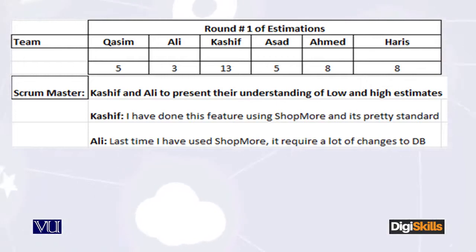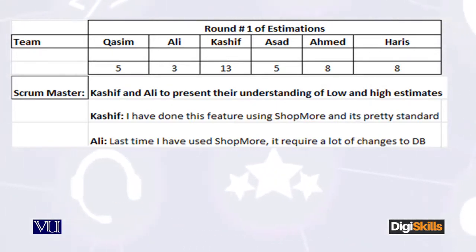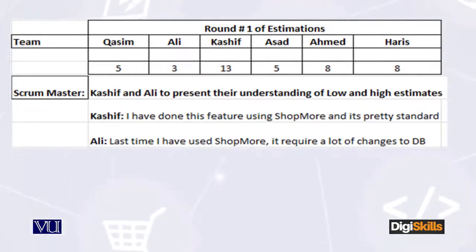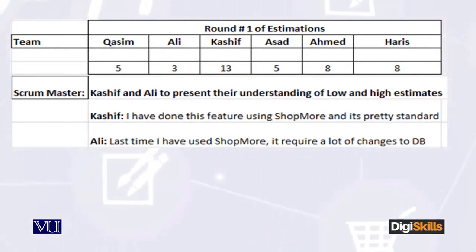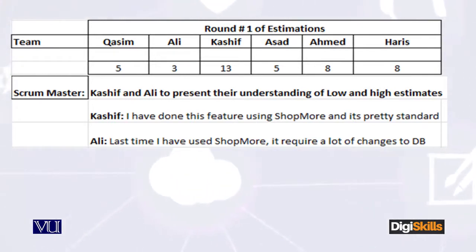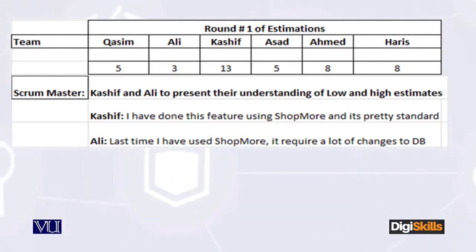Ali explained that he gave a low estimate because he has done something exactly like this before — he knows what to do and how to do it, so it's simple for him. Kashif says that the last time they worked on something similar, there were significant database changes required, which is why he gave a high estimate. A discussion follows and some requirements become clearer.